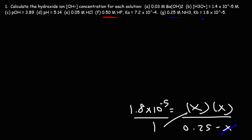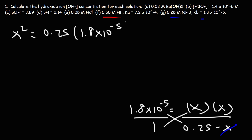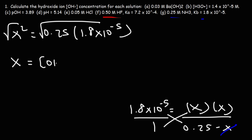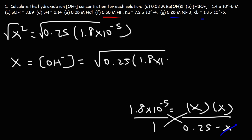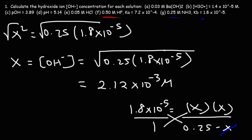Cross-multiplying gives X² = 0.25 times the Kb value. Taking the square root of both sides, X — which equals [OH⁻] — is the square root of 0.25 times 1.8 × 10⁻⁵, giving 2.12 × 10⁻³. So that's the hydroxide ion concentration. That's how we find it when given the concentration of a weak base solution.